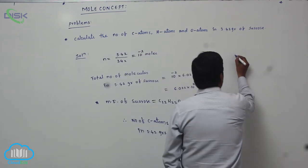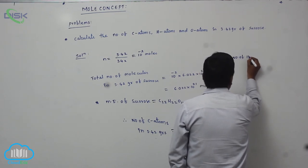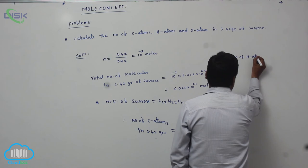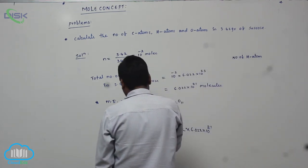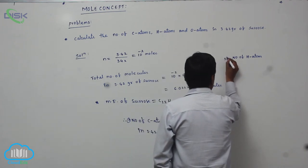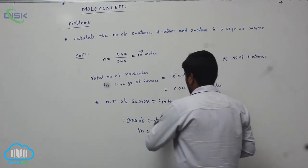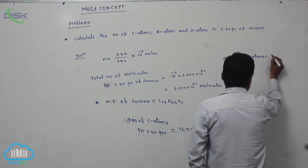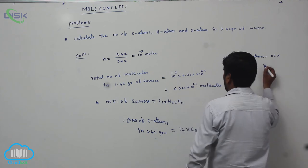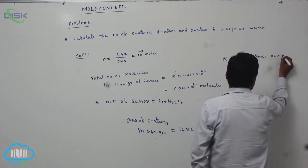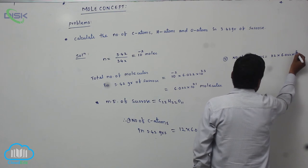Second, the number of H atoms: there are 22 hydrogen atoms in sucrose. So, number of H atoms equals 22 into total number of molecules, that is 22 into 6.022 into 10 power 21.